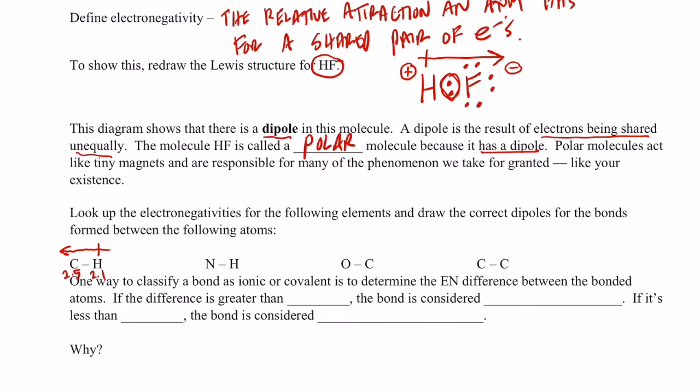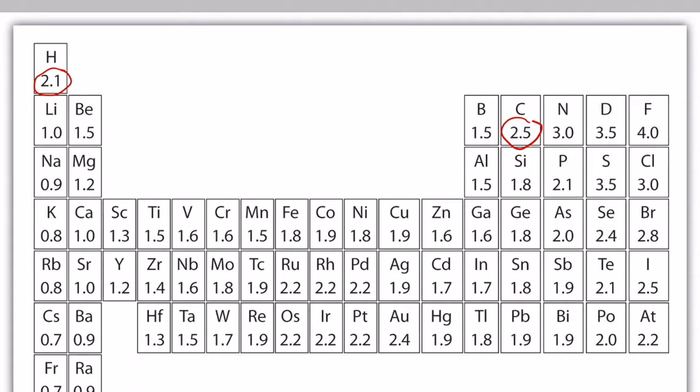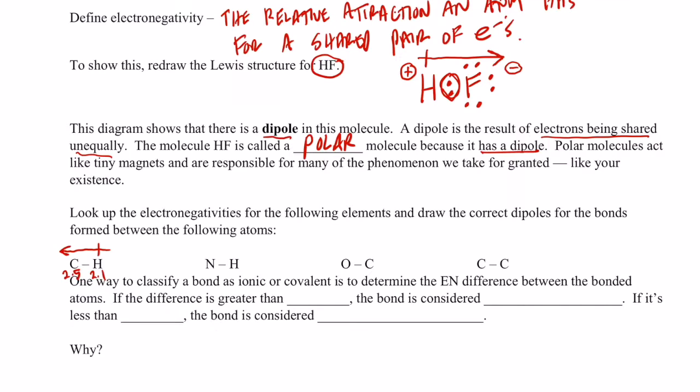Let's do it for N and H. The electronegativity for nitrogen is 3.0. We've just looked up hydrogen. It's 2.1. So nitrogen 3.0, hydrogen 2.1. Once again, we're going to draw an arrow to the more electronegative element and put a positive sign over the more electropositive element. Okay, you do the next two and then come back to the video to see if you did it correctly.